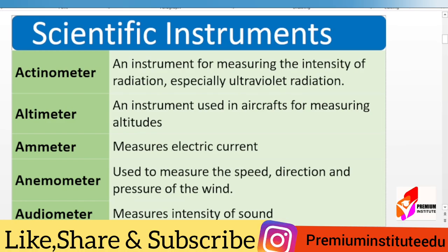First, actinometer — an instrument for measuring the intensity of radiation, especially ultraviolet radiation. Second, altimeter — an instrument used in aircraft for measuring altitudes. Third, ammeter — measures electric current. Fourth, anemometer — used to measure the speed, direction, and pressure of the wind.